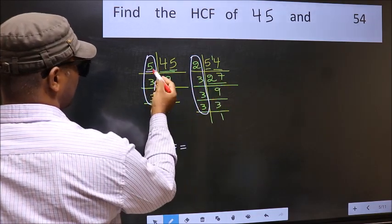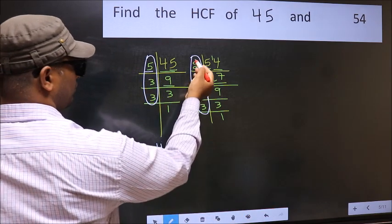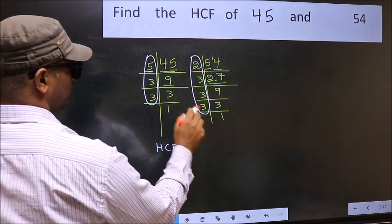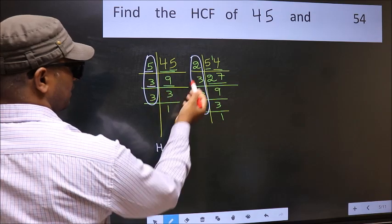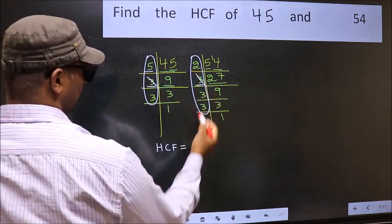Starting with the number 5. Do we have 5 here? No. Next number 3. Do we have 3 here? Yes. So cut 3 right here.